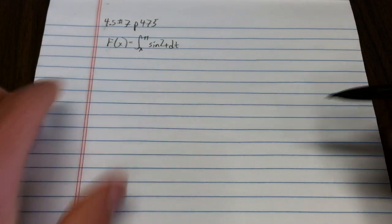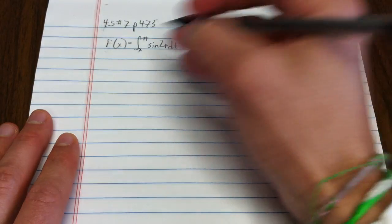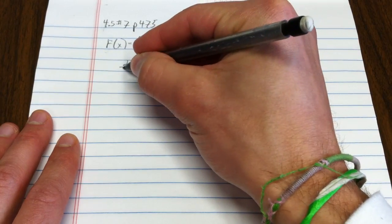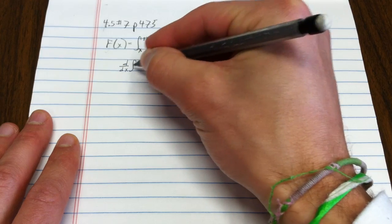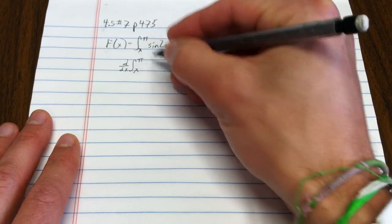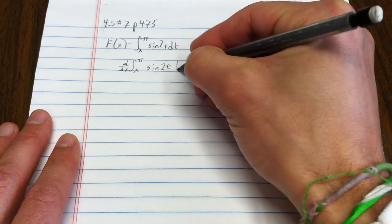So here's the function. I need to find the derivative of that. So really what I'm thinking is d dx integral from x to pi of sine 2t dt.